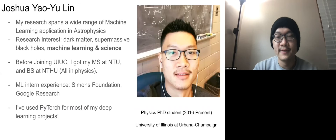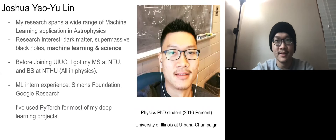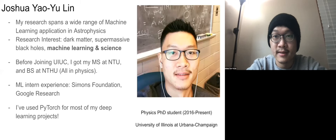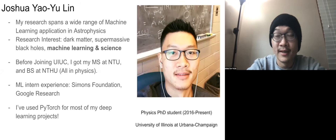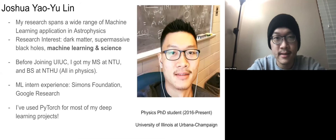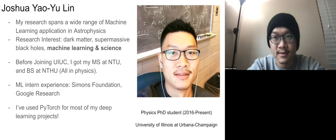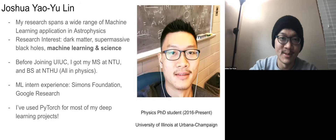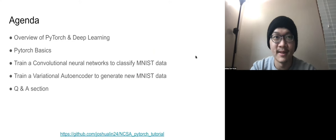Before we start, let me introduce myself since I might be new to some people here. My name is Joshua. I'm a final year PhD student in physics. My research has mainly been involved in machine learning applications for astrophysics, including topics like dark matter and supermassive black holes. These days I'm broadly interested in the intersection of machine learning and natural science. Last year I also spent some time working at Simon's Foundation and Google Research as an intern. I'm very glad to talk about PyTorch, which is one of the tools I personally love and use for most of my projects.